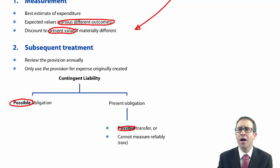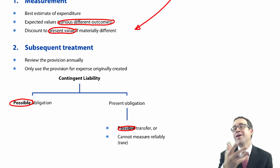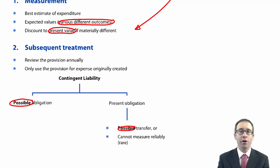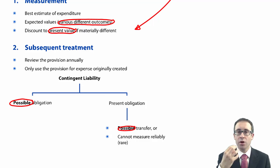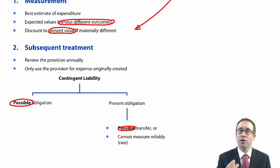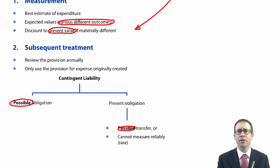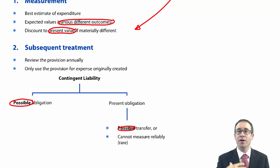If you have a contingent liability, the treatment is that we disclose it. We can disclose the financial effects and disclose a narrative explaining how and why that situation has arisen. Just be careful: a contingent liability under IAS 37 we disclose, but a contingent liability within group accounts in a subsidiary on acquisition under IFRS 3 we recognise at fair value if it can be measured reliably. That contingent liability may be the reason why we have a discount on acquisition — why we paid less for the subsidiary than its fair value. So be aware of the different treatment: IAS 37 disclose it; IFRS 3 recognise it at fair value if measurable reliably.